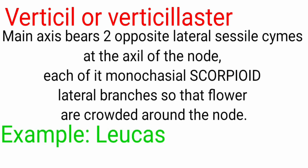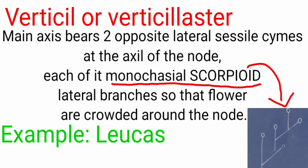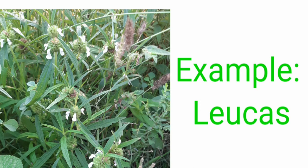The example for this is Leucas. The monochasial scorpioid cyme has an axis which develops on alternate sides and often produces a coil-like structure which helps to form a crowd around the node point of the plant. This is the Leucas aspera plant. Here you can find the white-colored flowers present at the node point, which are crowded with a green leafy-like structure.